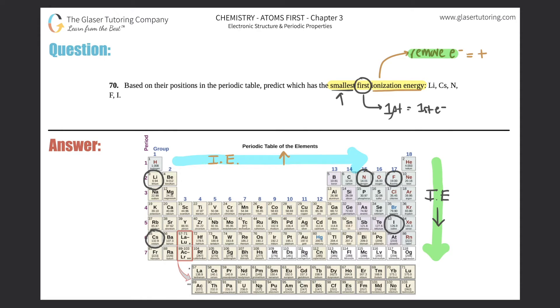The first thing I'm going to do is look at the group trend. The group trend is that as you go down a group, ionization energy decreases. That means the low energy ones are here and the higher energy ones are up here, and we're looking for the smallest.